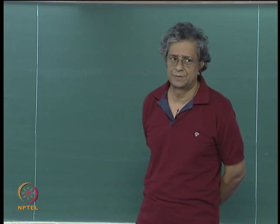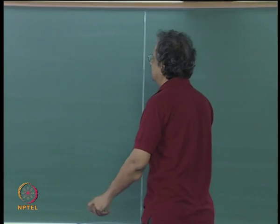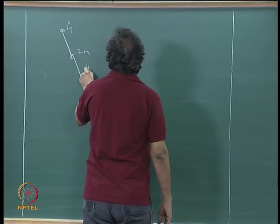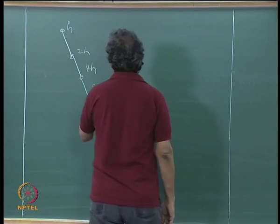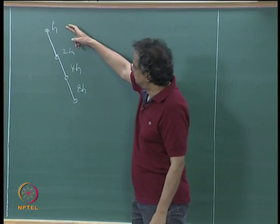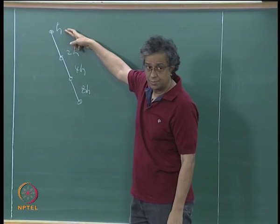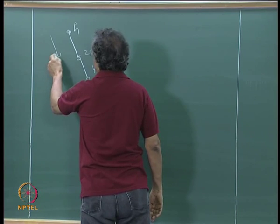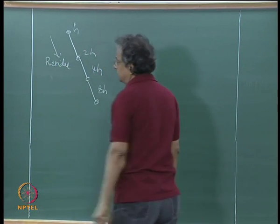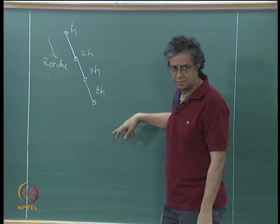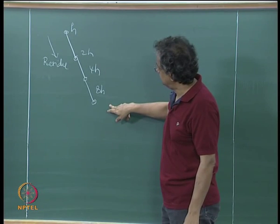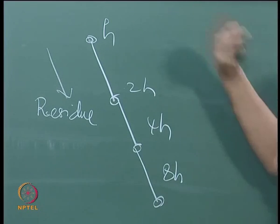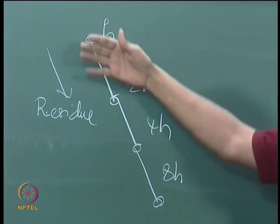So we have a process by which we transfer the residue. Going down, it is always the residue. I want you to remember this because when we do the Euler equations, there can be some confusion. You are going to transfer the residue from the fine grid to the coarse grid. Corrections will always be made on a finer grid. The residue is always passed to a coarse grid.